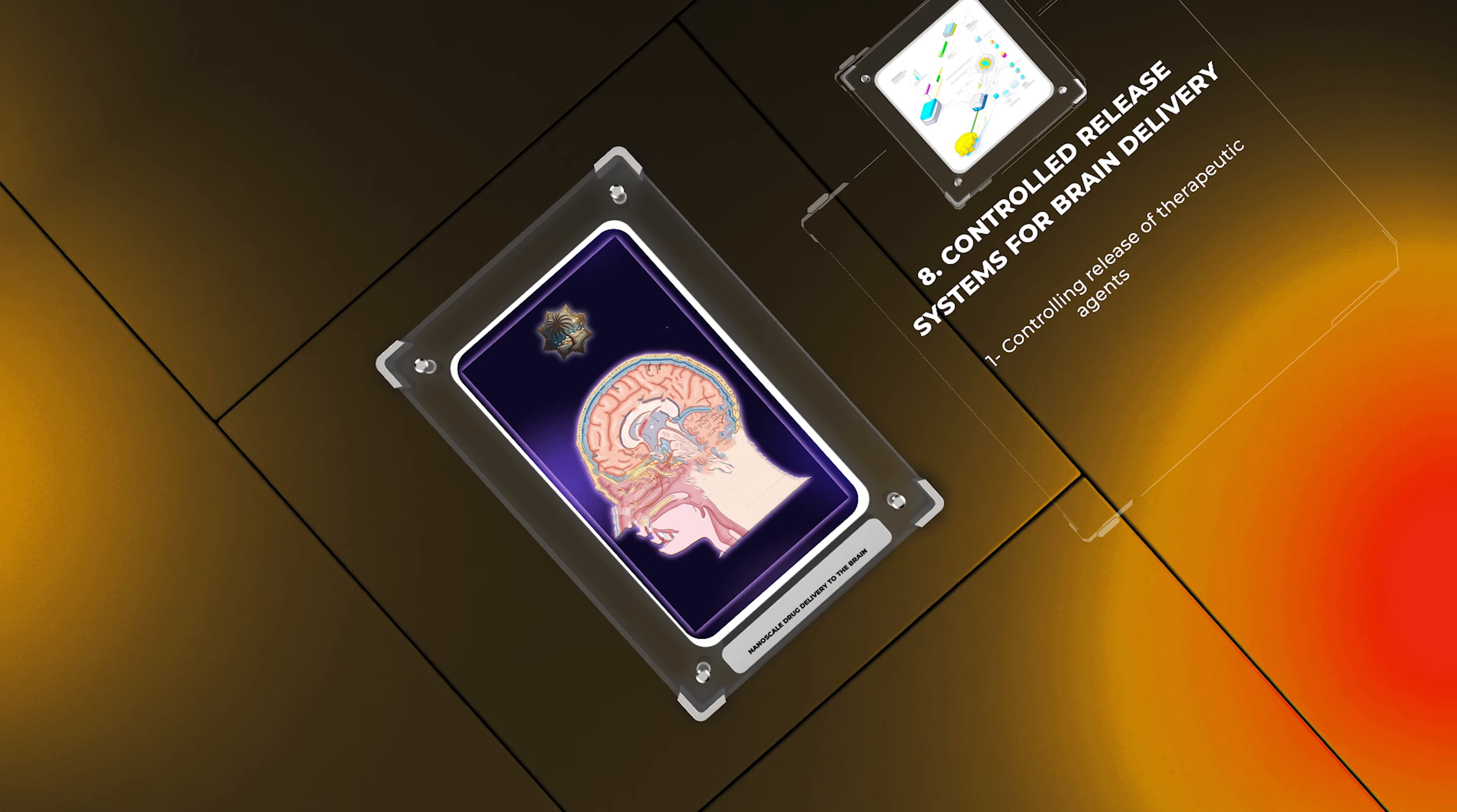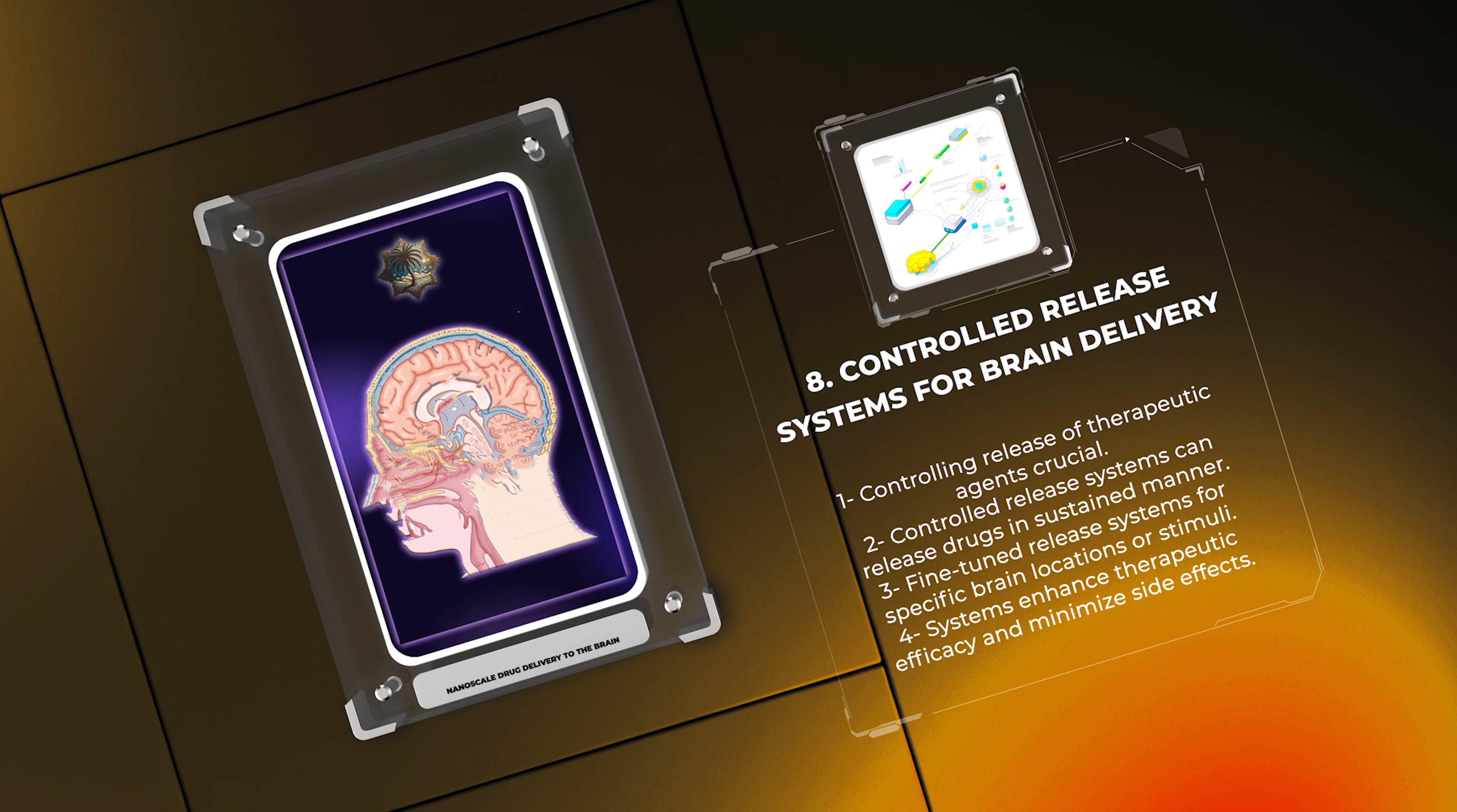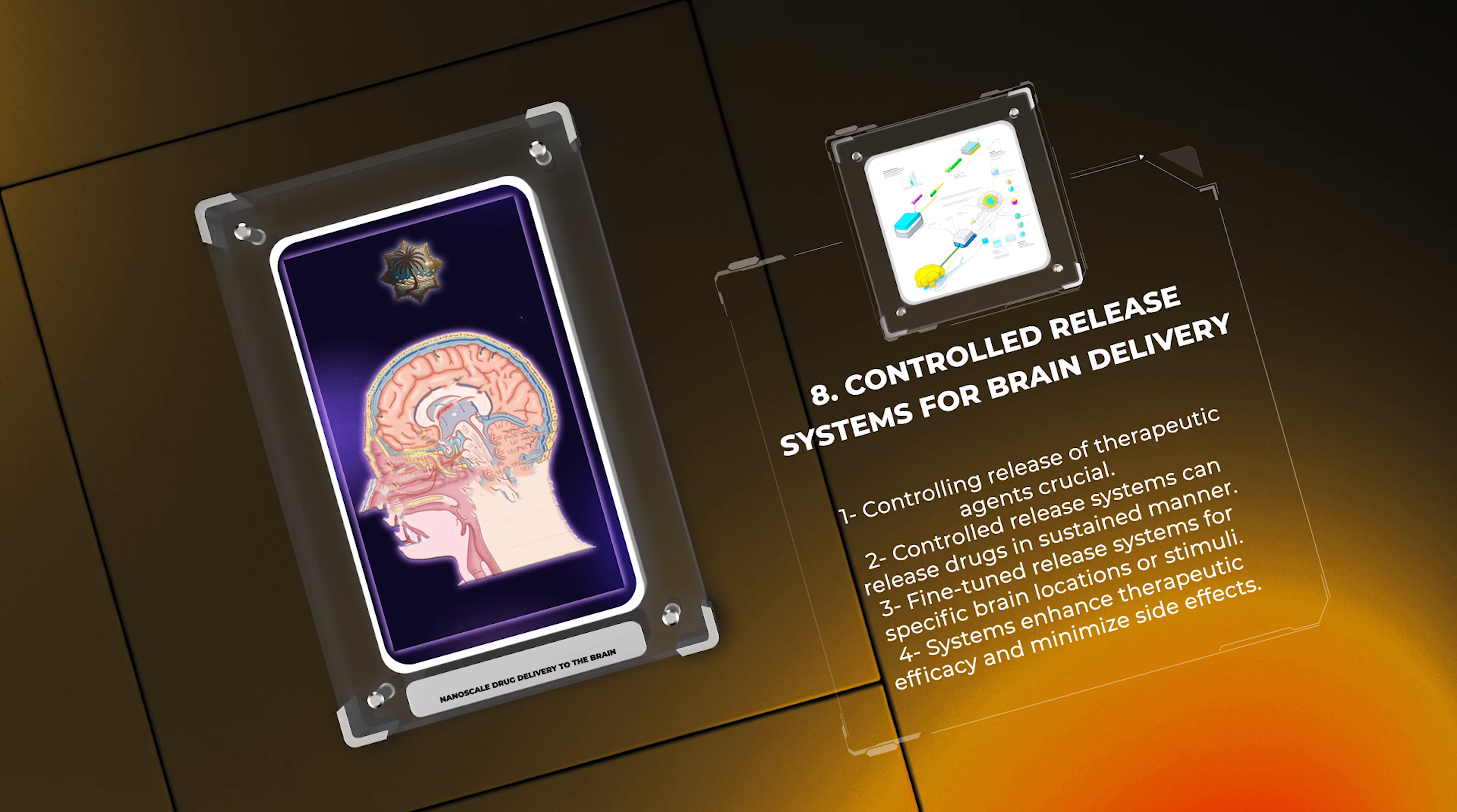Controlling the release of therapeutic agents in the brain is crucial for achieving optimal drug concentrations and minimizing side effects. Scientists have developed various controlled release systems, such as drug-loaded nanoparticles and hydrogels, that can release drugs in a sustained manner over a prolonged period of time.